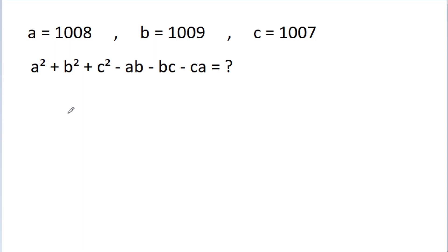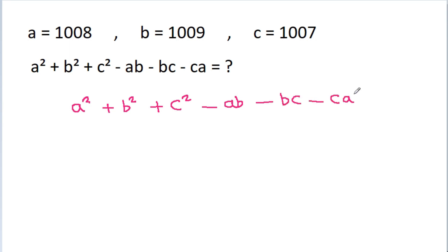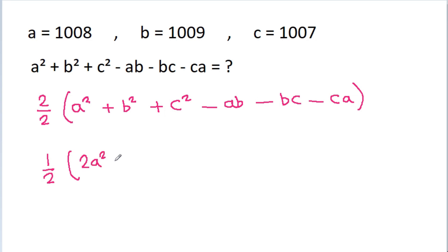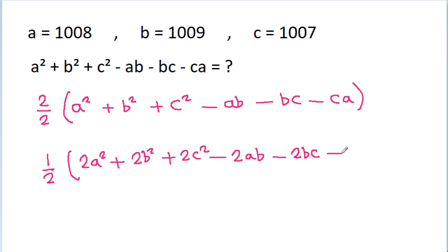We have to find the value of a squared plus b squared plus c squared minus ab minus bc minus ca. And if we multiply this with 2 by 2, then it is 1 by 2 times 2a squared plus 2b squared plus 2c squared minus 2ab minus 2bc minus 2ca.